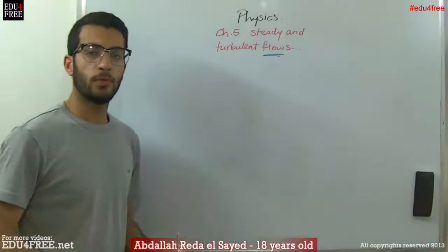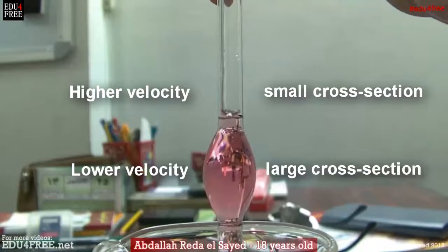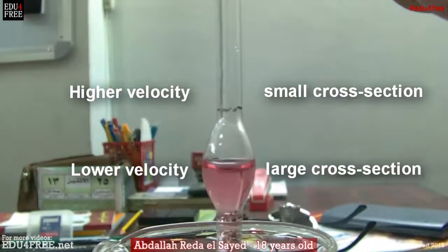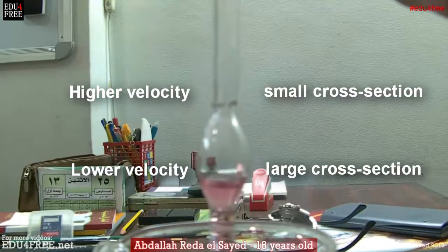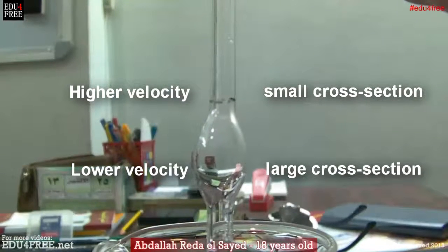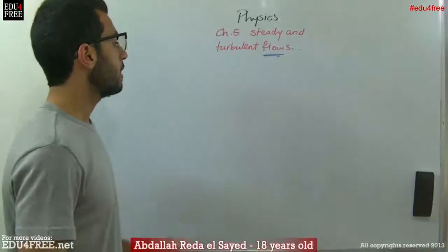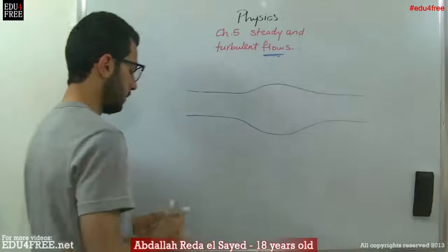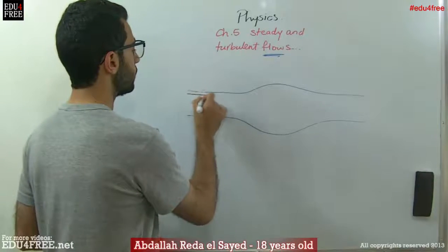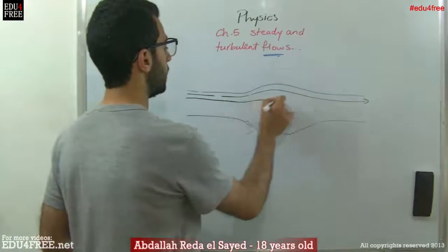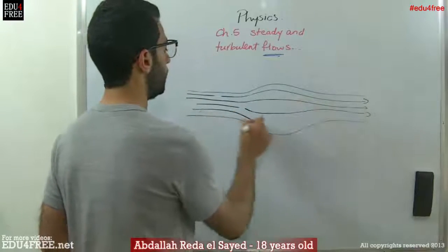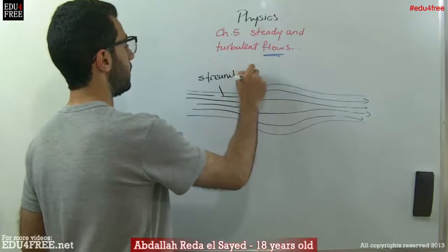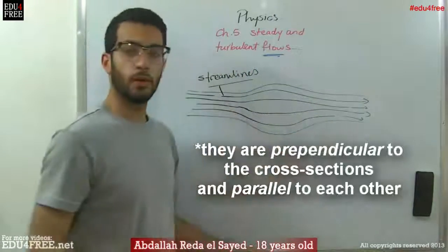We will begin with steady flows. Here is an example: if we have a tube, the liquid moves in adjacent lines. These are called streamlines. The streamlines move parallel to each other and their number is constant.